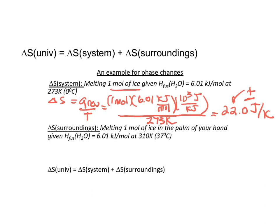So that's our value for ΔS of the system. What we do in this example is we say, let's put that ice cube in the palm of our hand. The palm of our hand would represent the surroundings.